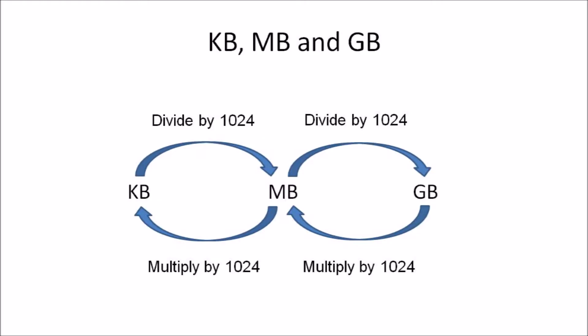How do we decide whether to multiply or divide? It's simple — remember which unit is smaller. Kilobytes are smaller than megabytes, and megabytes are smaller than gigabytes. So from kilobytes to megabytes, you're going from a smaller unit to a larger unit, which means you always divide.